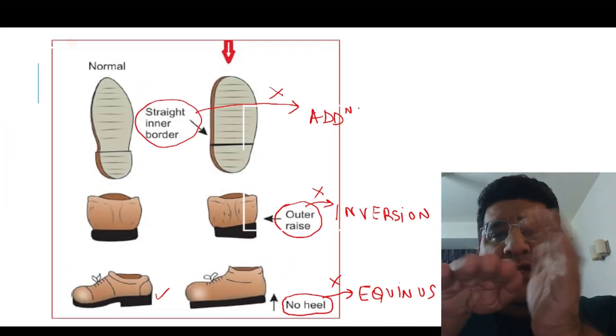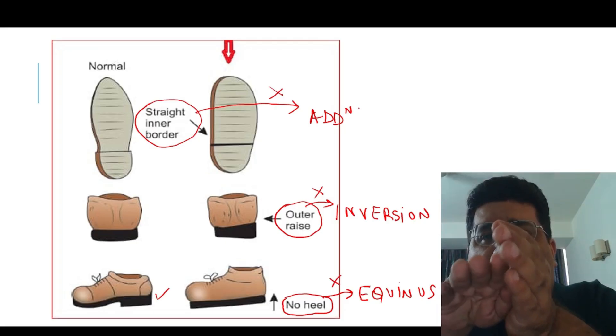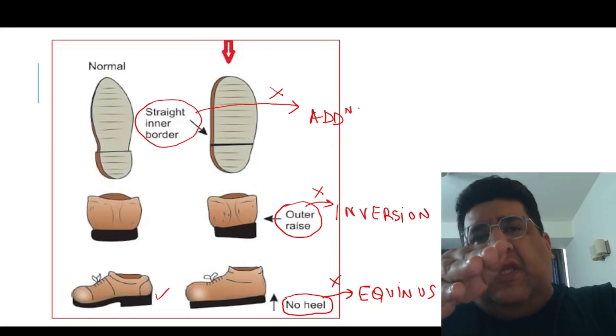There are three deformities. Number one, no heel to prevent equinus. Straight inner border to prevent adduction. Outer shoe raise to prevent inversion.